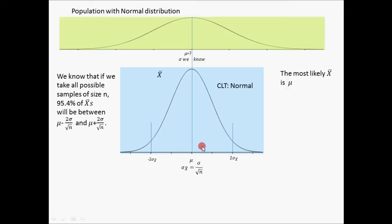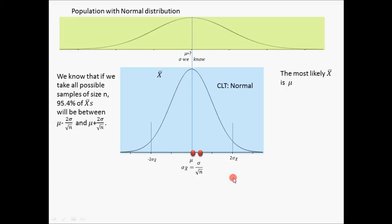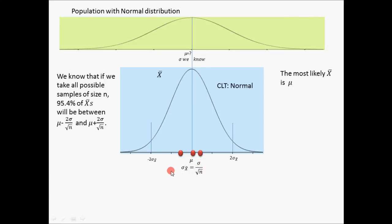Now let's see what happens when we start taking these samples. The first sample would have a mean close to the mean of the population; another sample maybe a little bit to the other side. We know that the distribution of sample means would have a concentration around the mean of the population, and its dispersion around the mean is less than the dispersion of the population, because the dispersion of the sample means is sigma divided by square root of n.